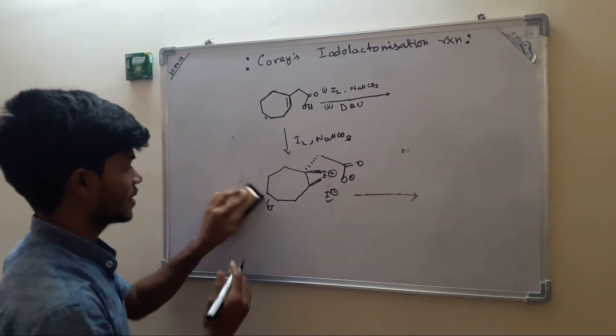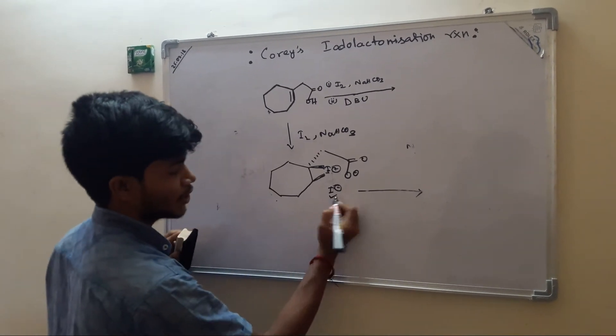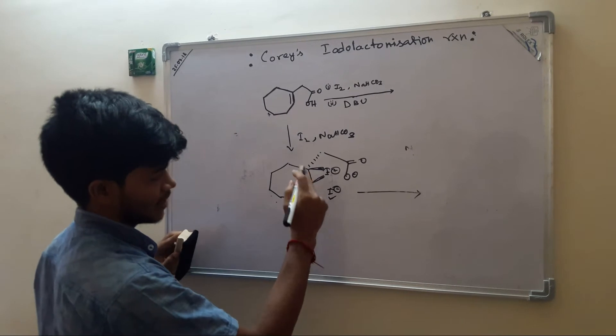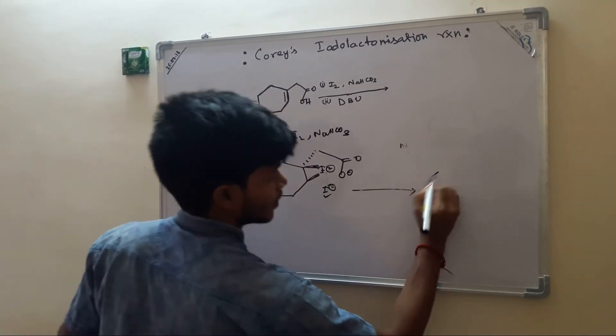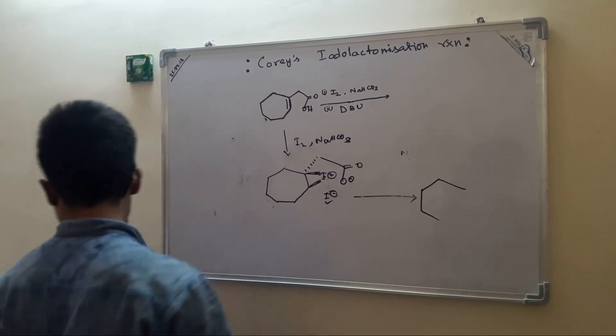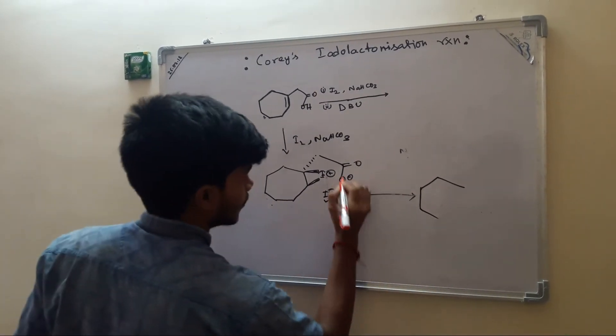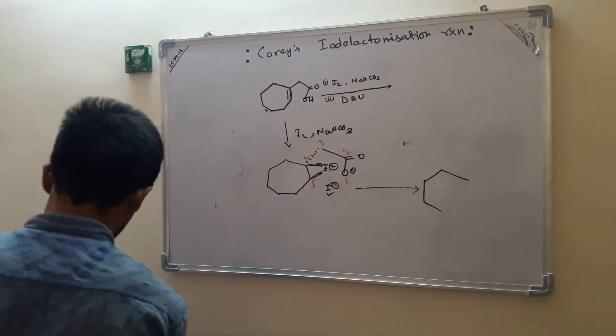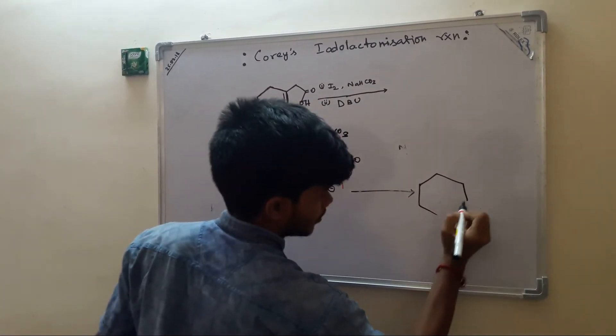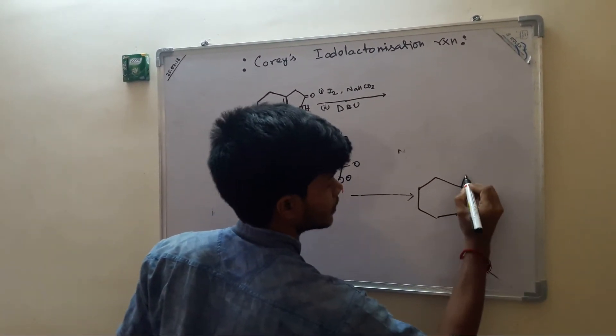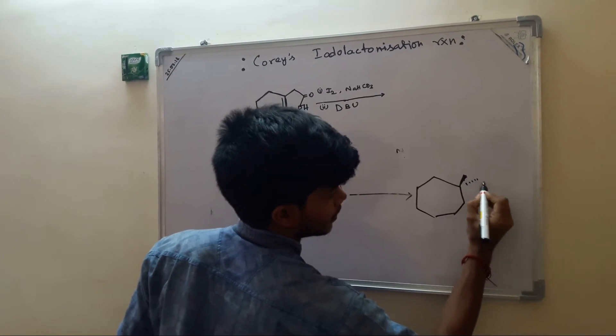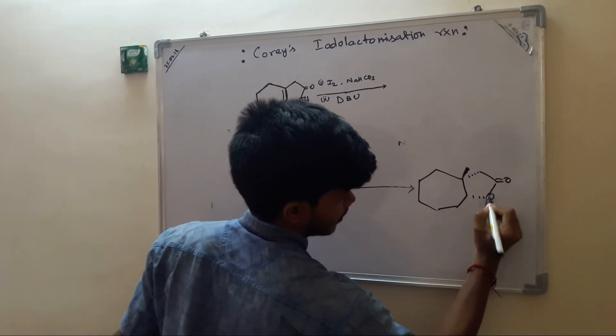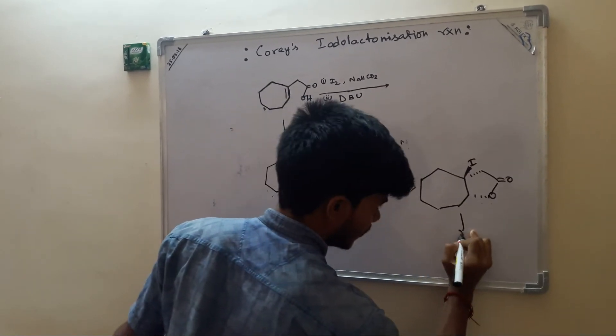If we apply this, though iodide minus is more nucleophilic, carboxylate anion will attack this iodonium salt. Then it will form 5-membered ring: 1, 2, 3, 4, and 5.